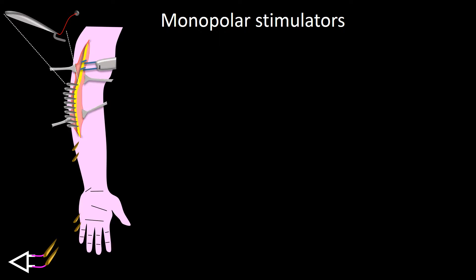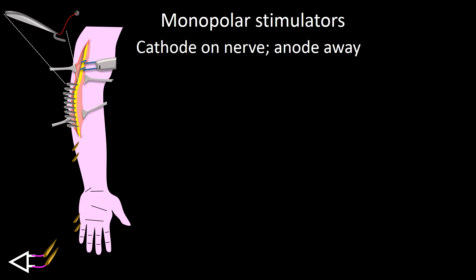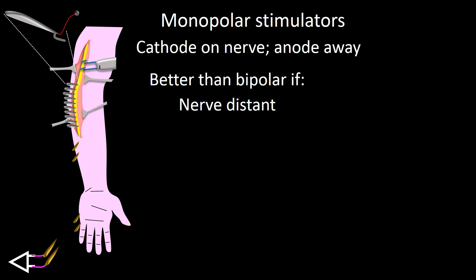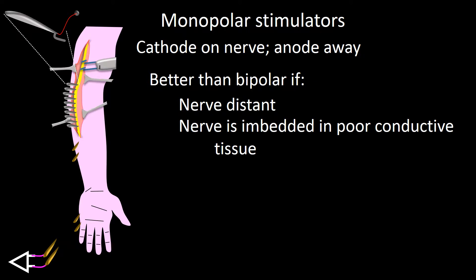Monopolar stimulators have the cathode placed on the nerve and the anode at a site not contaminated by nerve activity. They are better than bipolar if the nerve is distant, embedded in poorly conductive tissue, or if there is excessive fluid in the surgical field, since only one pole would be in the fluid — the other pole, the anode, being far from it — making short circuitry less likely.